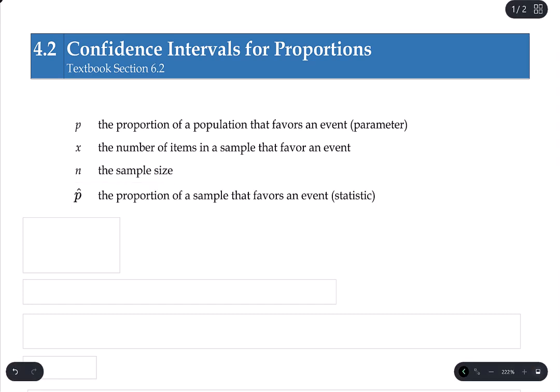And p hat, this is a new variable for us here, but this is a proportion out of a sample that favors an event. And p hat works as an estimator for p in the exact same way that x bar was an estimator for mu. So p hat is the proportion from a sample, p is the proportion for the population.